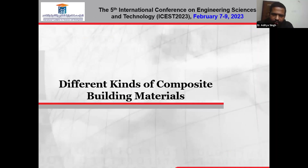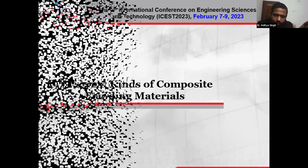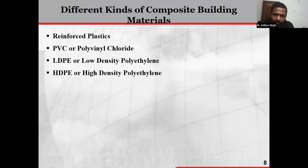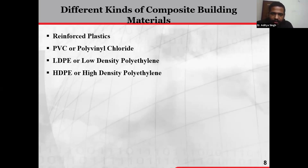Different kinds of composite building materials — in this section we discuss a few of the different kinds of composite materials generally used, such as reinforced plastics, polyvinyl chloride, low density polyethylene, and high density polyethylene. Reinforced plastics are reinforced with fibrous materials comprising wood, fiberglass, and other materials. They can be of two types: thermoset and thermoplastics.